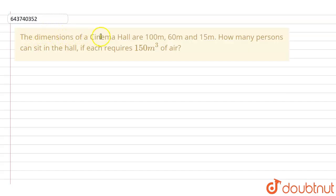In this question, it is given that the dimensions of a cinema hall are 100 meters, 60 meters and 15 meters. How many persons can sit in the hall if each person requires 150 meter cube of air?